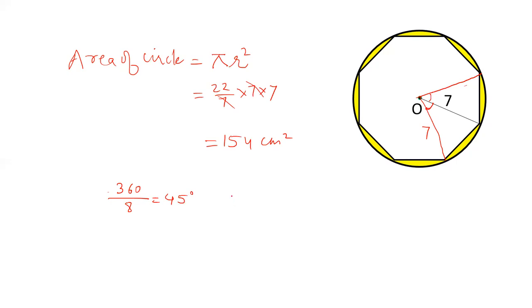And there is a formula of a triangle. Area of triangle can be found out by the formula, 1 by 2 ab sin theta. Here a and b are r each and each angle is 45. So, it is sin 45 and the value of radius is given as 7. Value of sin 45 is 1 by root 2.